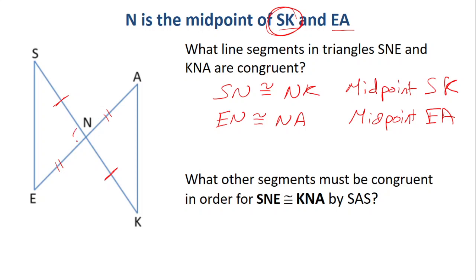So we actually know that angle N on either side is congruent. So if I call the angle on the left angle 1, and the angle on the right angle 2, then angle 1, whose name is properly SNE, is congruent to angle 2, whose name would be KNA.